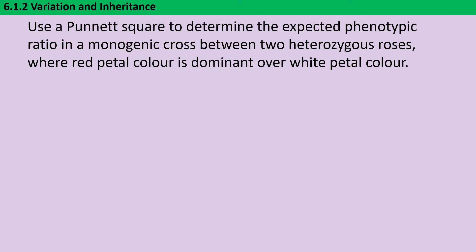In this question we're asked to use a Punnett square to determine the expected phenotypic ratio in a monogenic cross between two heterozygous roses, where red petal colour is dominant over white petal colour. This could very easily be a GCSE question — we're just drawing a Punnett square for one single gene. The difference from GCSE is that rather than explicitly giving us the genotypes, they're asking us to work them out ourselves. We're going to go through six steps to construct our Punnett square and work out the expected phenotypic ratio.